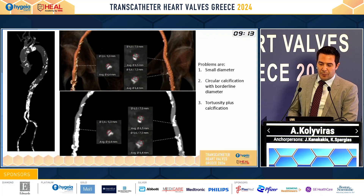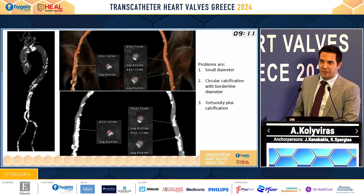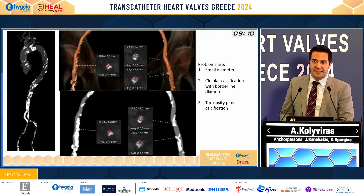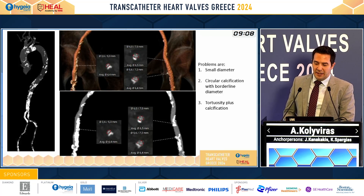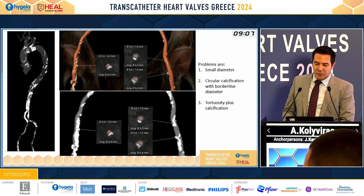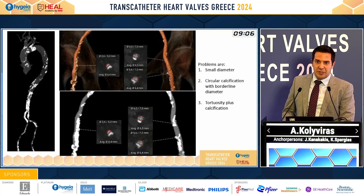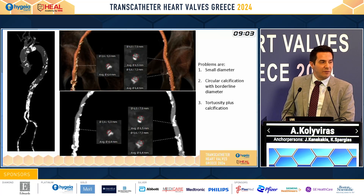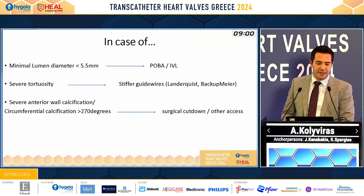Some possible problems could be the small diameter of the vessels, less than 5 millimeters, circular calcification especially in the anterior wall of the vessel. And if we have a tortuosity plus calcification, how can we solve these problems?